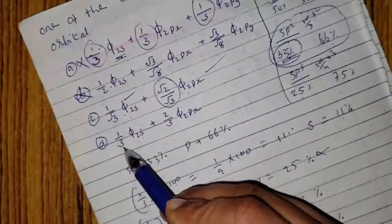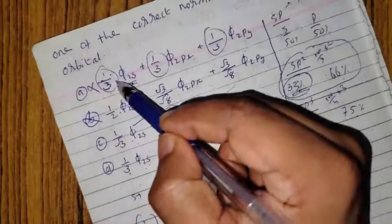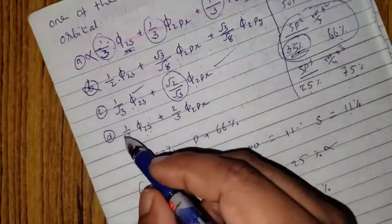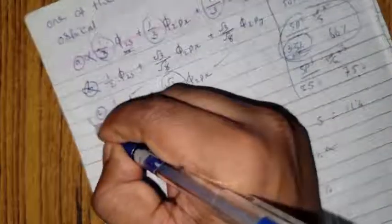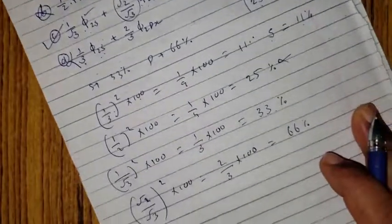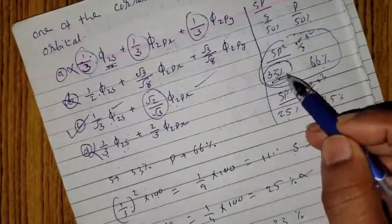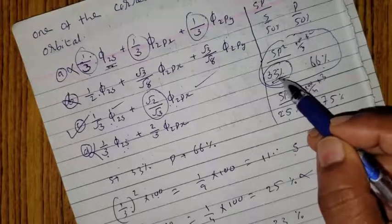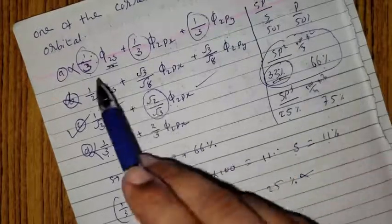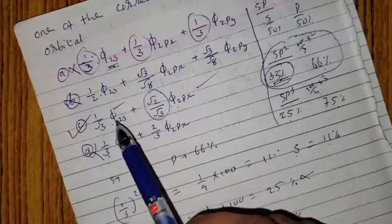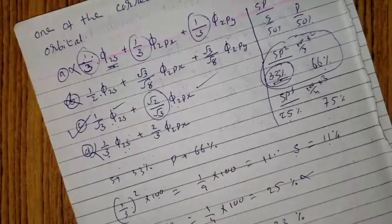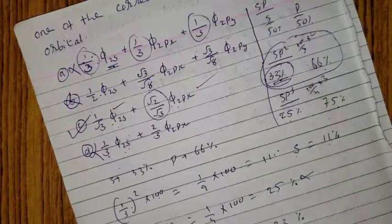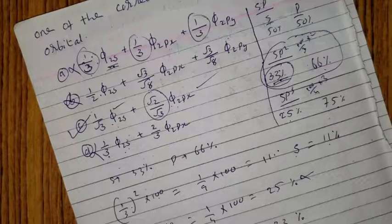This is correct option C. S character and P character: sp² is 33% and 66%. The coefficient squared times 100 gives this percentage, 66%. The option C is correct.